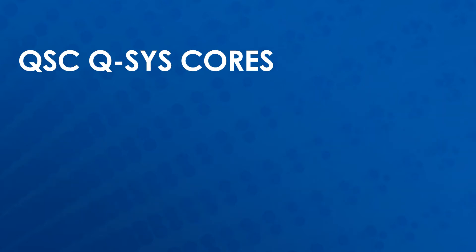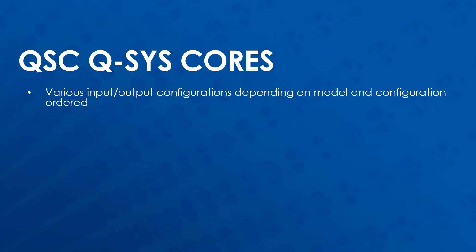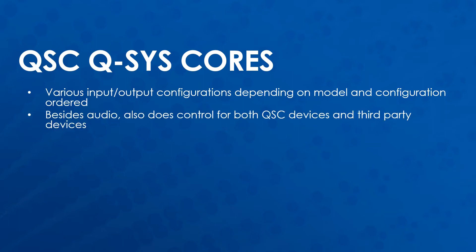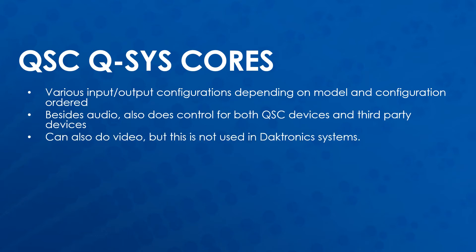QSC's Q-SYS cores are a family of DSP units that are core to the Q-SYS ecosystem. They have various input and output configurations depending on the model and configuration ordered. Besides audio, they are also capable of controlling both QSC devices and integrating with third-party devices to act as a centralized control system. Q-SYS cores can also do some video routing, but this is currently not used in Daktronics systems.